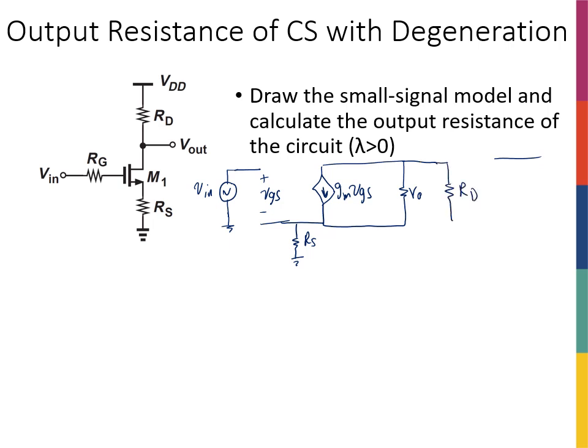This time R0 and RD are not in parallel anymore. In the normal common source, R0 was connected between drain and source, and the source was grounded, so RD between drain and ground meant they were in parallel. But now R0 is between drain and source while RD is between drain and ground, so they're not in parallel. That's one of the most common mistakes students make, so be aware of that.